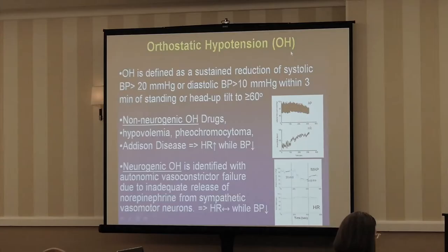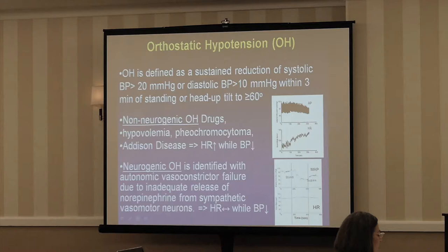Switching briefly to orthostatic hypotension — which I rarely see — it now has a precise consensus definition: 20 mmHg systolic or 10 mmHg diastolic drop within three minutes of standing or tilt. Remember there's also initial orthostatic hypotension; if you're really fast with the blood pressure cuff, you'll catch that early transient drop and think something is really wrong, but it's not. Start taking blood pressure at about a minute out and you should be safe.